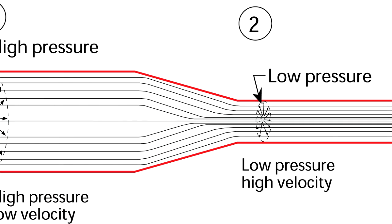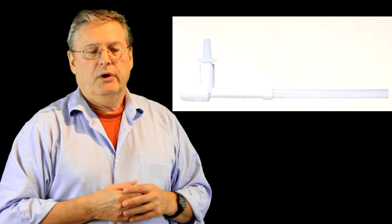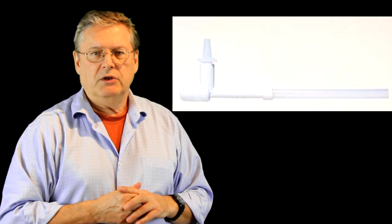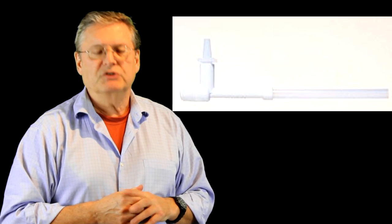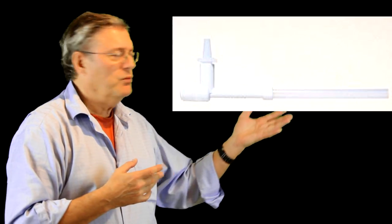One is pressure energy that is reduced, causing the velocity energy to increase or the velocity to increase. These little venturis are available probably a lot of places. I found mine on a website by Fisher Scientific. It's called a Nalgene aspirator and this is what it looks like.